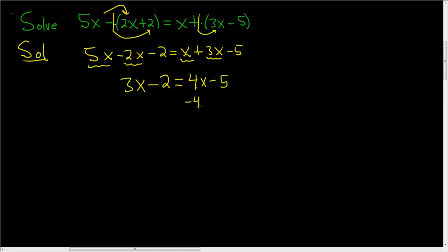Let's go ahead and subtract 4x from both sides so we have all of the x terms on one side. So 3x minus 4x is minus x and we still have the minus 2 and this is still equal to negative 5.